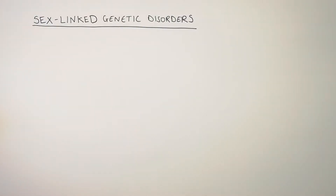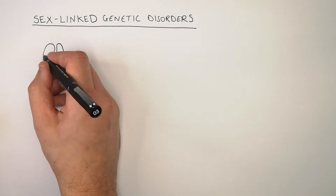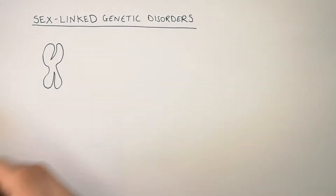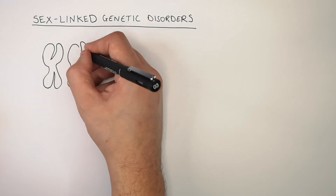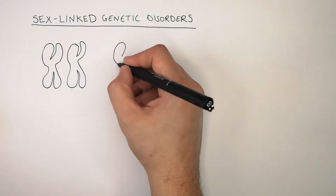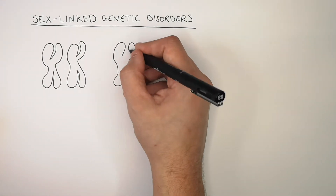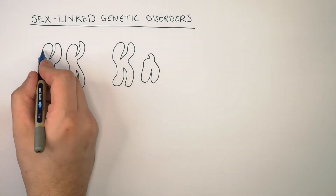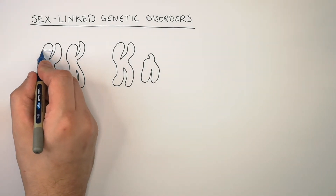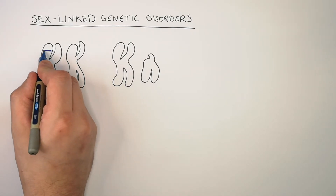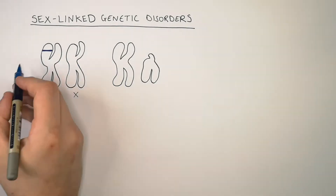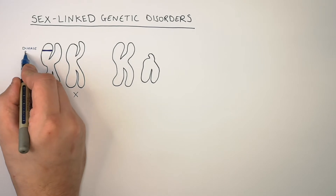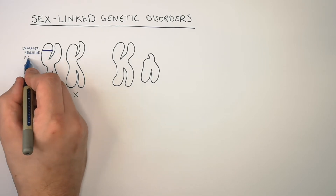In this video, we're going to look at how sex-linked genetic disorders are inherited. A woman will have XX chromosomes, whereas a man has one X chromosome and one Y chromosome. Let's imagine that this woman is carrying the recessive allele for a disease on one of her X chromosomes.